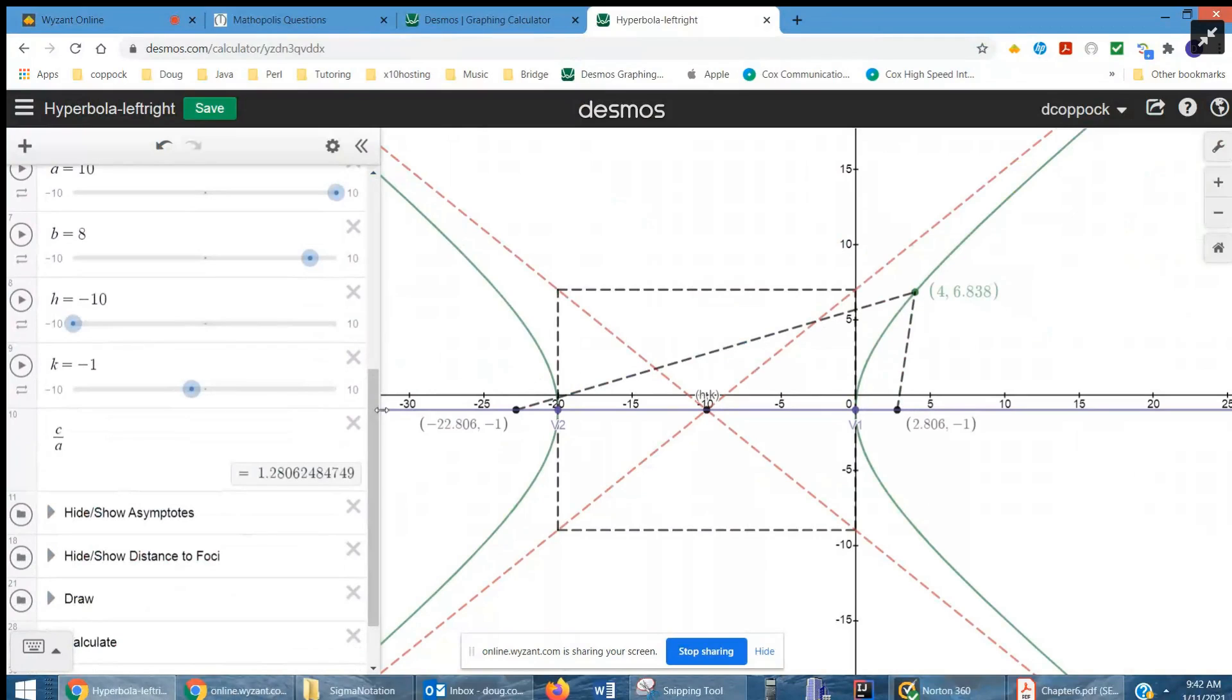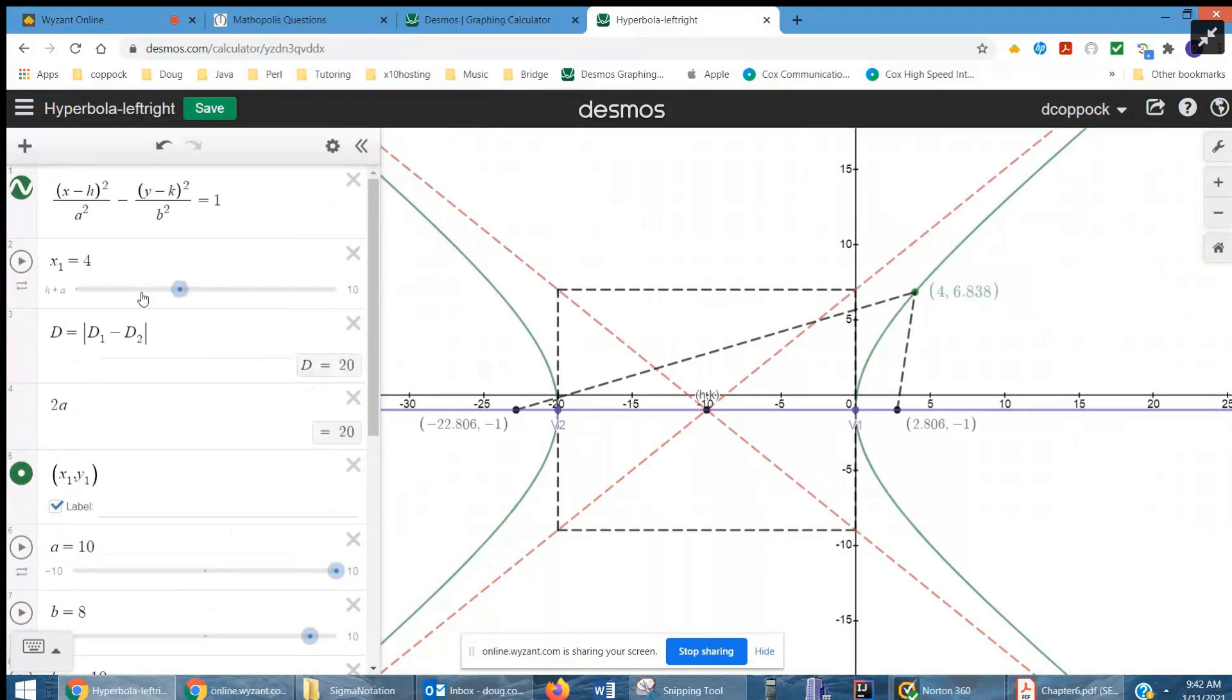Well, the difference between them. So there's the distance to one foci, there's the distance to another foci, and if I move that x coordinate around, notice that d is always 20. That's the definition of a hyperbola.